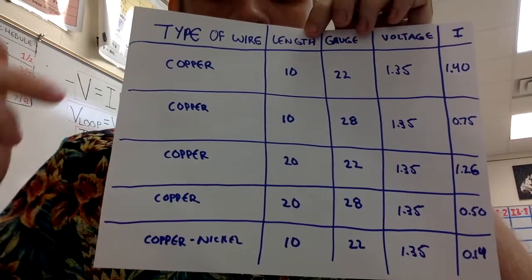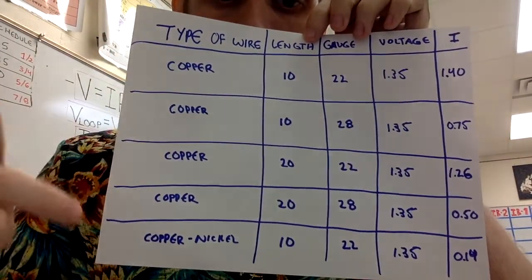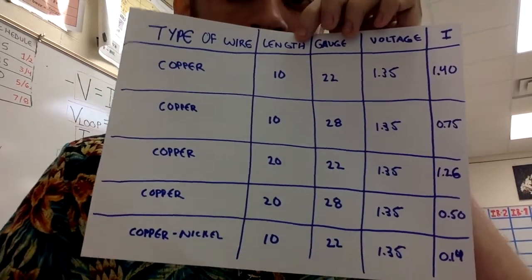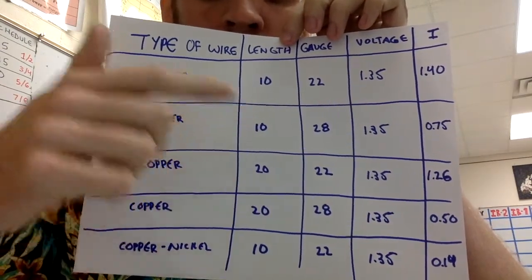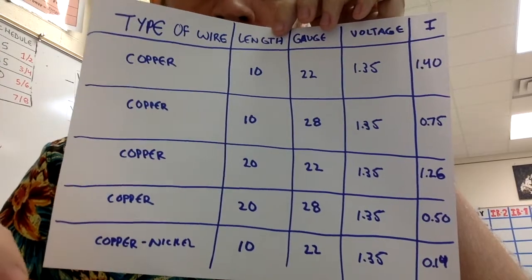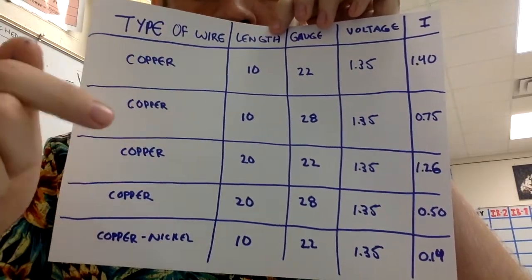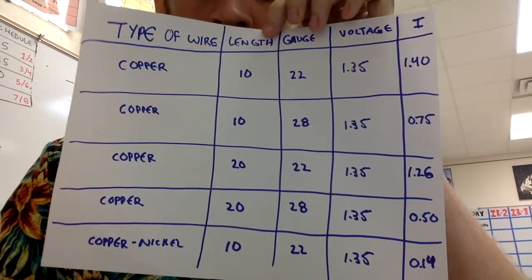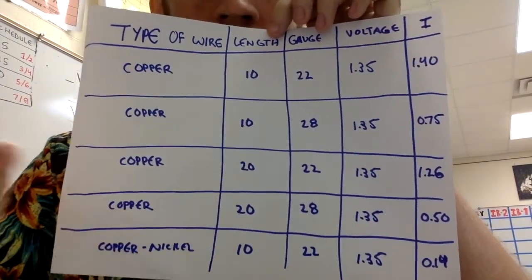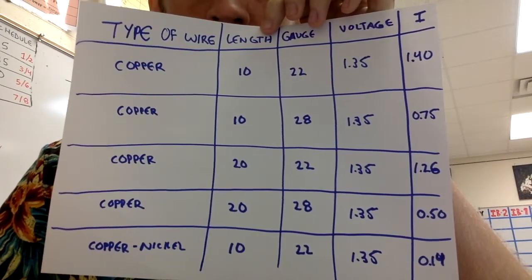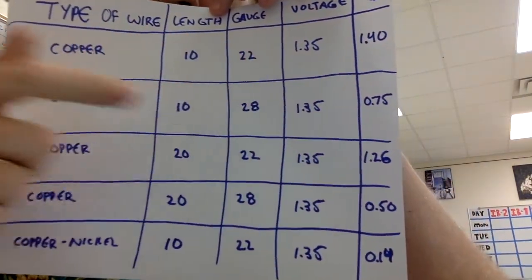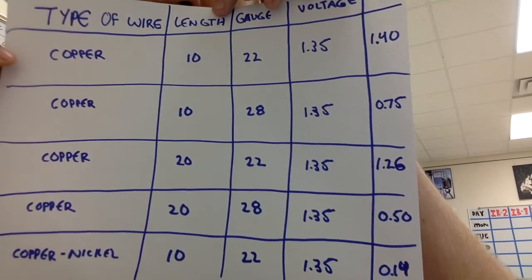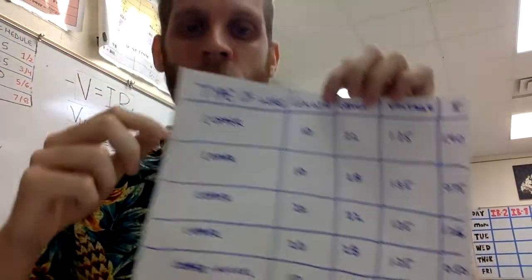Okay, so filling in the table. Here is the table. We had copper, copper, copper, copper, and then a copper nickel alloy for the types of wires in that order. The length was 10 meters, 10 meters, 20, 20, and 10. The gauges, which you will have to convert to cross-sectional area, is 22, 28, 22, 28, 22. Don't put the gauge numbers. Put the area, because you'll need to use that for the calculation. The voltage for all of them was 1.35 volts, about. Some of them were 1.33, some of them were 1.35. I think that was just depending on where I connected the circuit. And here is the current values in amps: 1.4, 0.75, 1.26, 0.5, and 0.14 amps for each wire. So there's your data. Now you can use it to calculate resistivity.